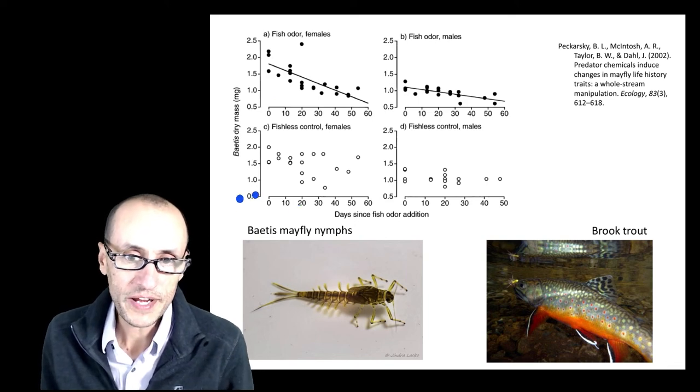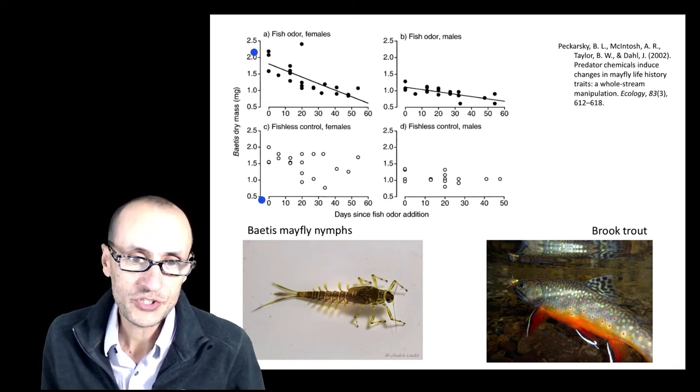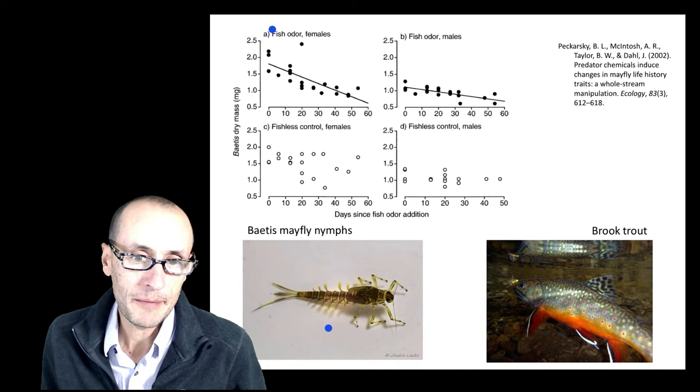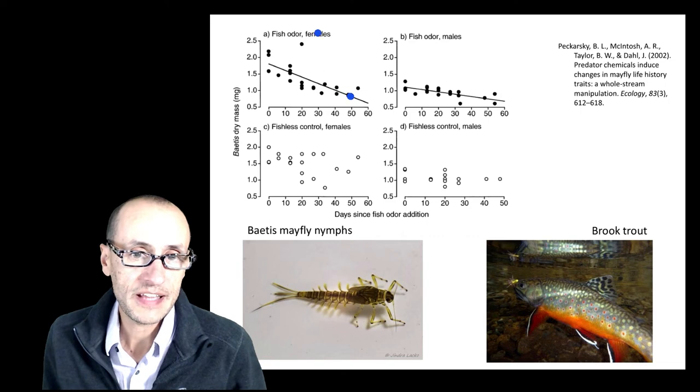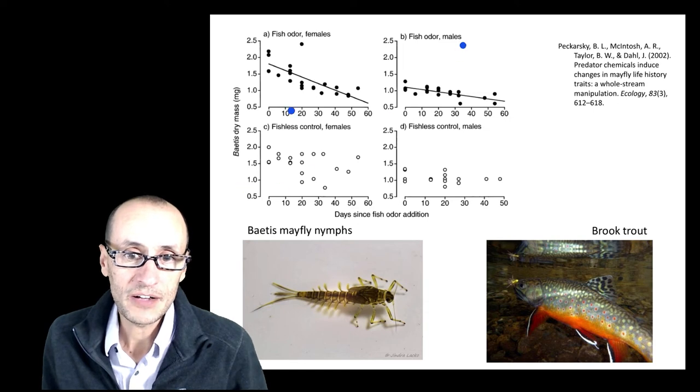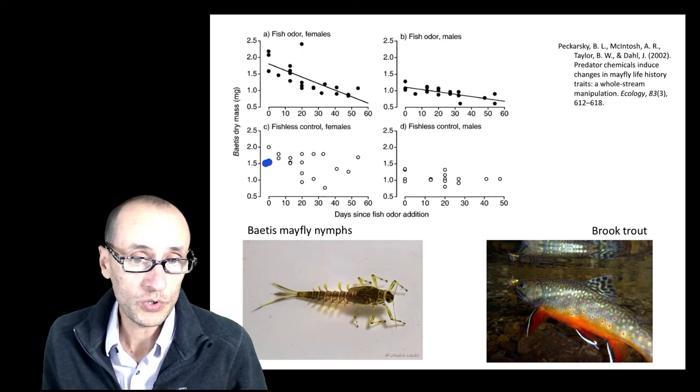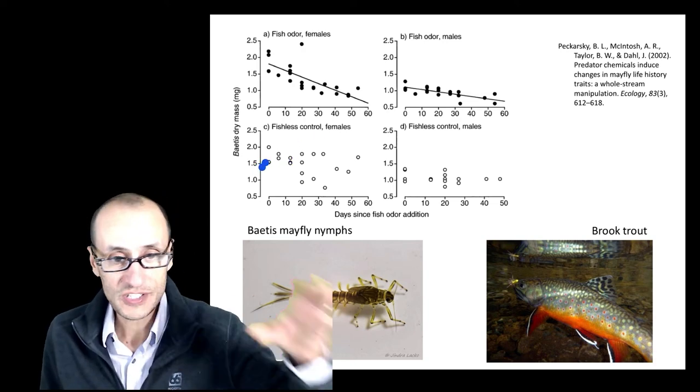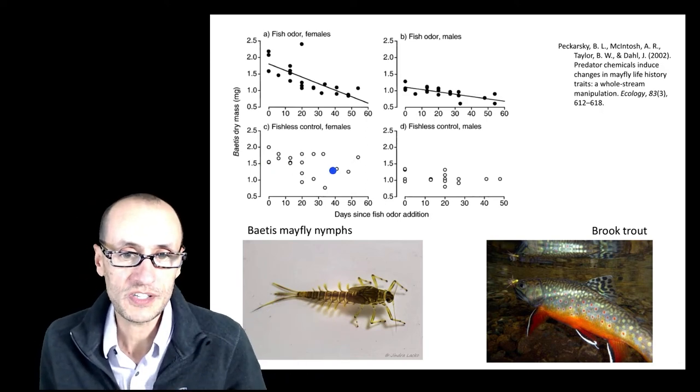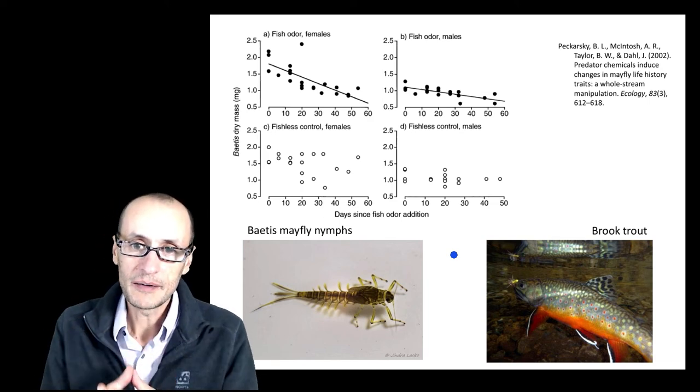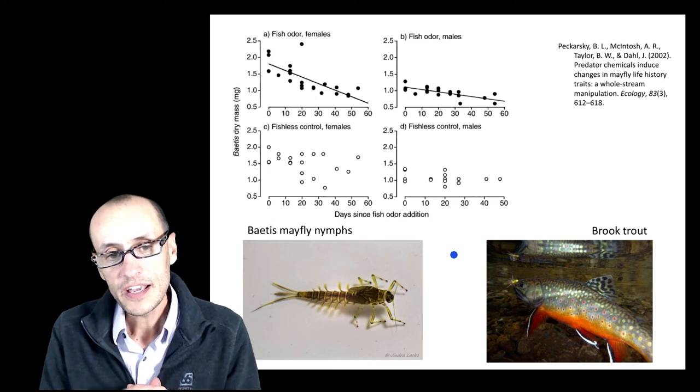And what happens when you start adding this odor to the water is you see that the Baetis mayflies actually decrease quite significantly in the biomass that they put on. And this is for both the females and males. And this effect was quite strong compared to fishless controls, streams that didn't have this essence of fish juice that was dribbled on them.